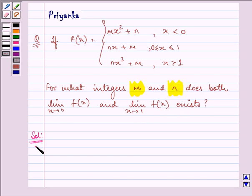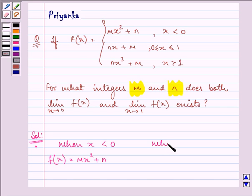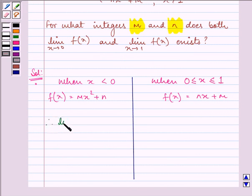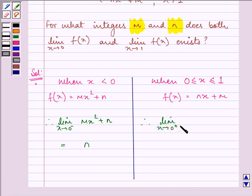In this question we are required to find the integer values of m and n. When x is less than 0 the function is mx squared plus n, and when x is greater than or equal to 0 but less than or equal to 1 the function is nx plus m. So the limit as x approaches 0 from the left-hand side of mx squared plus n gives us n, and the limit as x approaches 0 from the right-hand side gives us m.